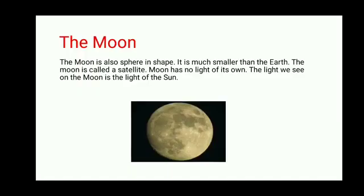Our next topic is the Moon. The Moon is also a part of the solar system. The Moon is also sphere in shape. It is much smaller than the Earth. The Moon is called a satellite. A satellite means a moving object that revolves around the Earth or other planets.